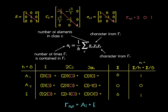It turns out that the A1 representation describes how the Z vector transforms, and the E representation describes how the XY vectors transform as a pair. It's a little bit easier to see why X and Y must transform together if we go through and block-diagonalize these matrices to determine the representations through the block-diagonalization method.